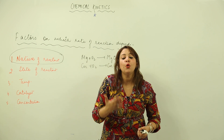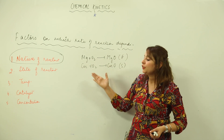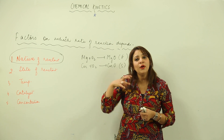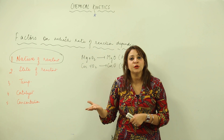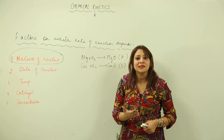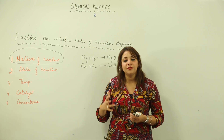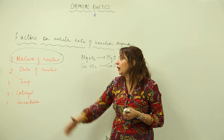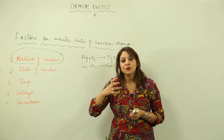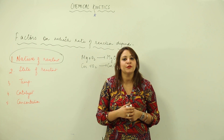Magnesium and copper are both metals but the rate of reaction is different — one is fast and the other is slow — because it depends on the nature of the reactants: how eager they are to form the product. Magnesium is more reactive and has more affinity to collide with oxygen, resulting in magnesium oxide faster, while copper is less reactive, so its reaction is slower.